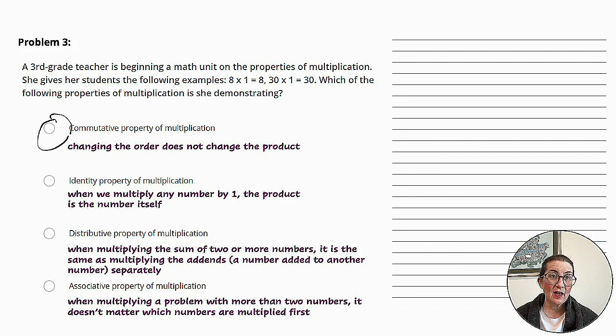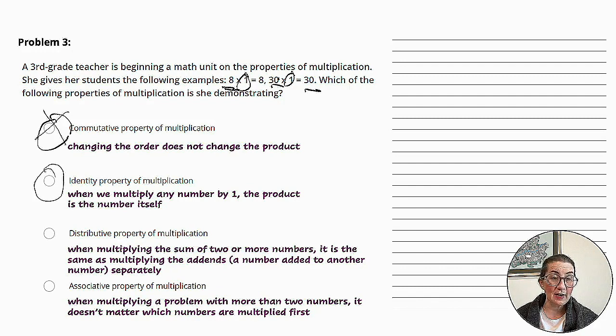Next, identity property of multiplication. When we multiply any number by 1, the product is the number itself. So again, we look 8 times 1 is 8 and 30 times 1 is 30. So this one fits even better than the first with our example. So I think we can cross that one out. And let's go on just to make sure.